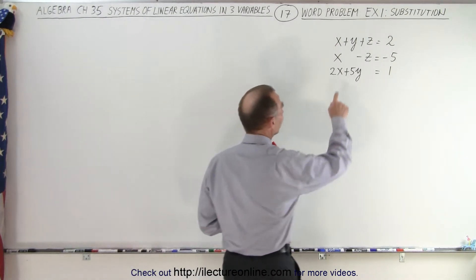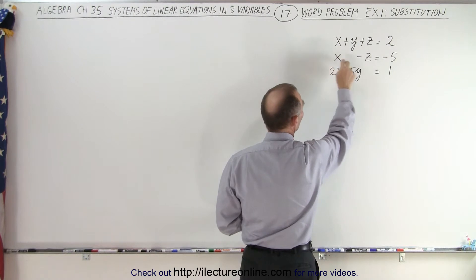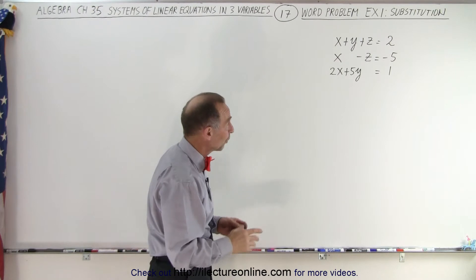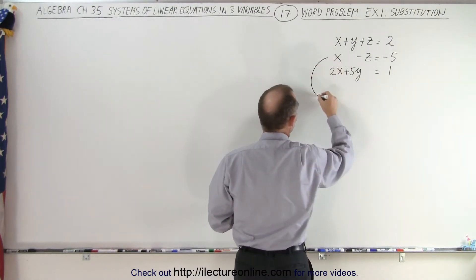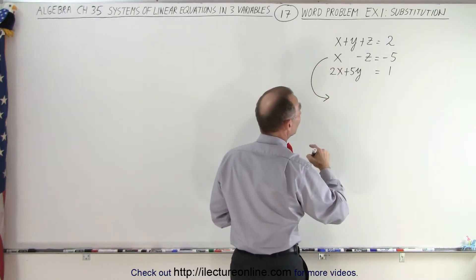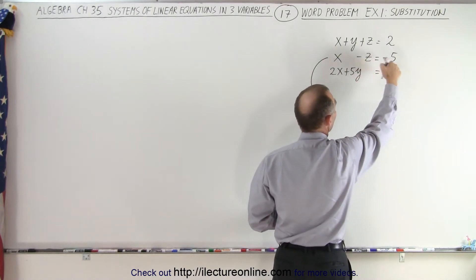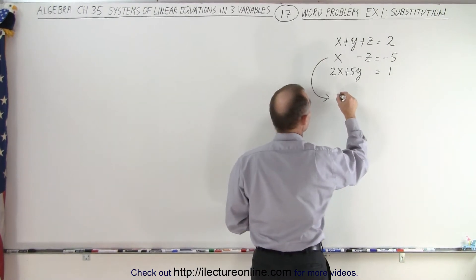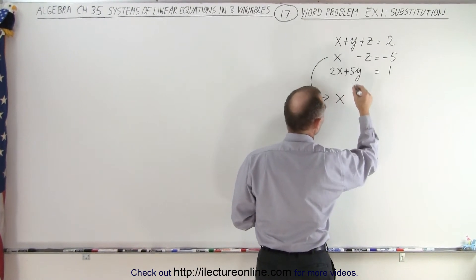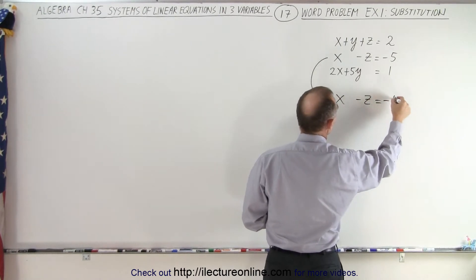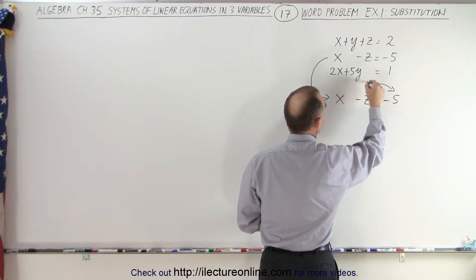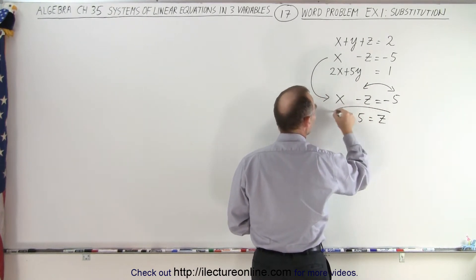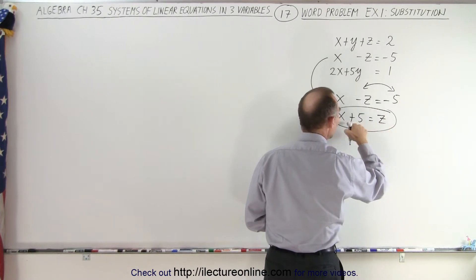So what we can do here is notice that the middle equation has only two of the three variables and they only have a coefficient of one and negative one in the front. So we can actually take that second equation and solve that for the variable z. By moving z to the right and the negative five to the left so that the negative signs change to positive signs, we can get x minus z equals negative five. So we switch the five and the z, so we get x plus five is equal to positive z. So here we have z in terms of x.